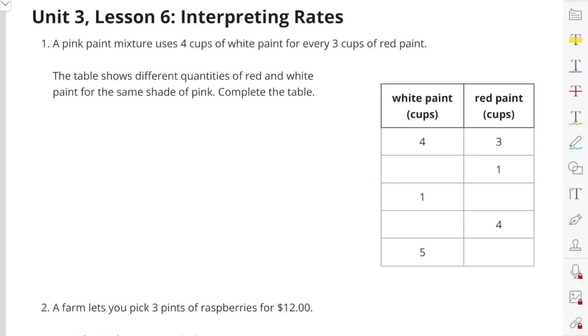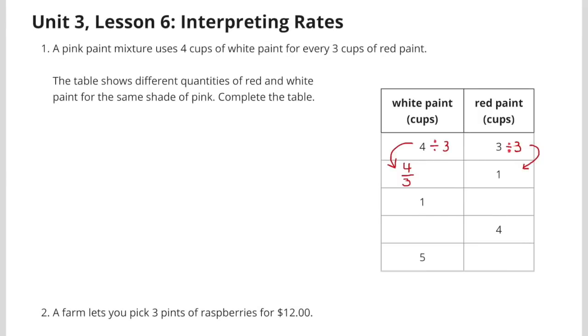Unit 3, Lesson 6, Interpreting Rates, Number 1. A pink paint mixture uses 4 cups of white paint for every 3 cups of red paint. The table shows different quantities of red and white paint for the same shade of pink. Complete the table.